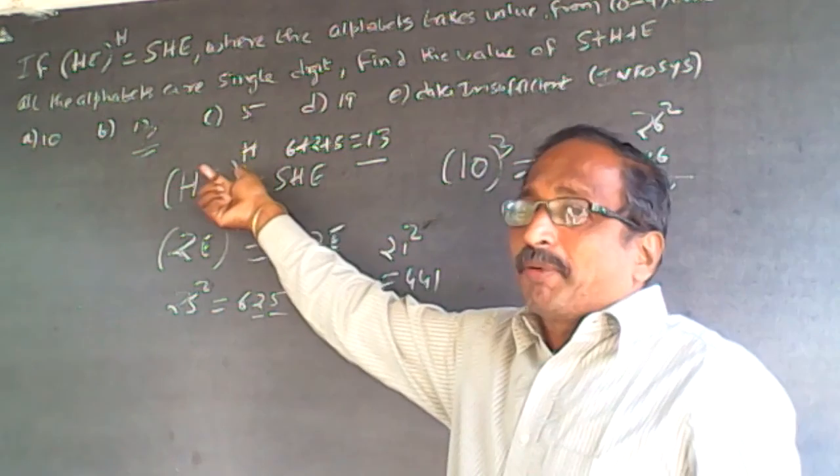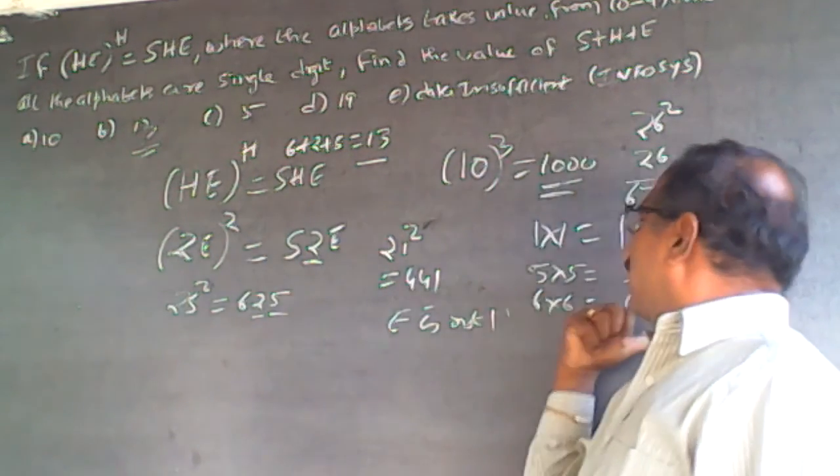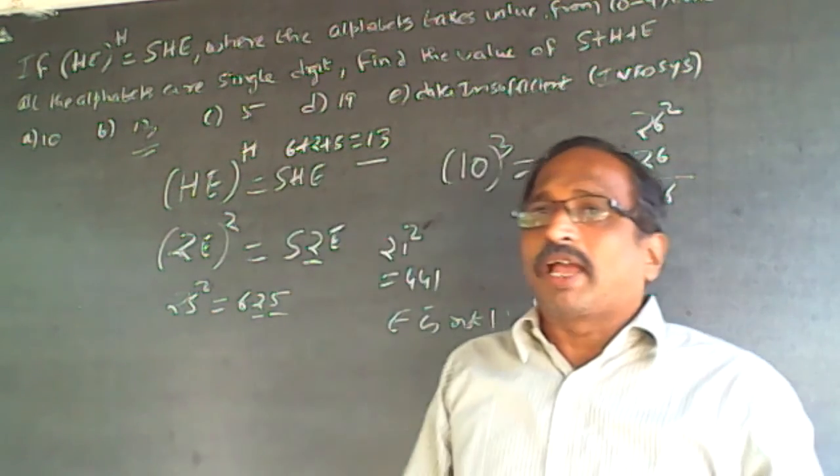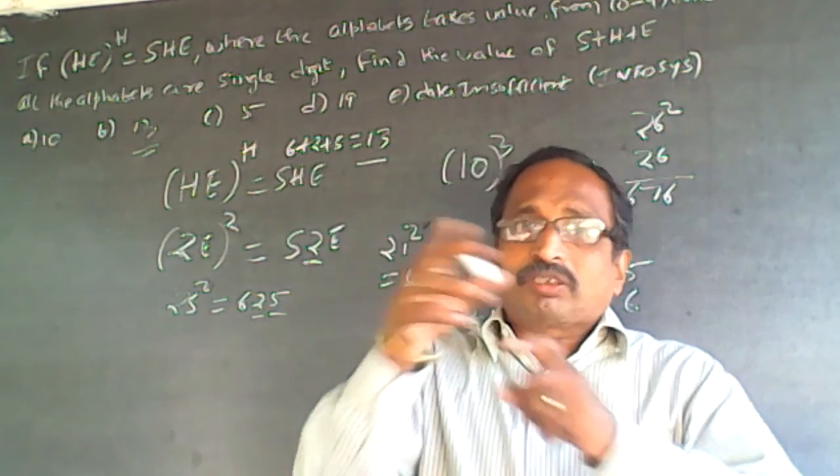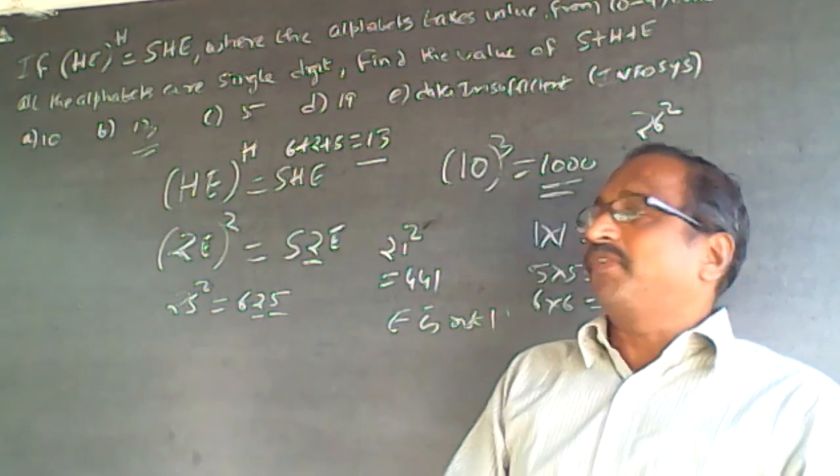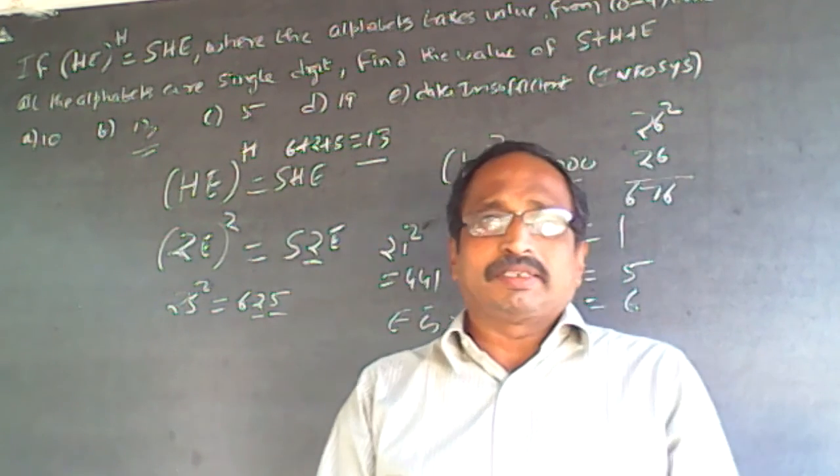So this HE power can't be more than 2. Therefore I take it as 2. Then I find out square number same number 1, 5, and 6 is eliminated. So I get only 25 square is 625 because of the 2 in between. Therefore the answer is 25 square is 625, and the requirement of the question is S plus H plus E will be 13. As simple as this.